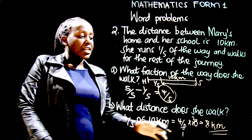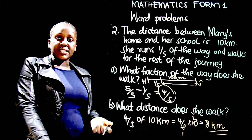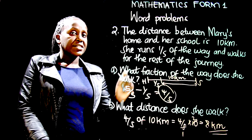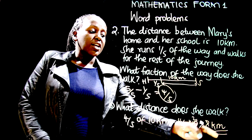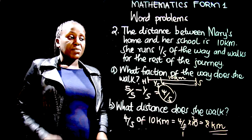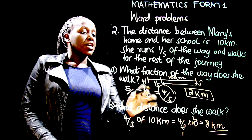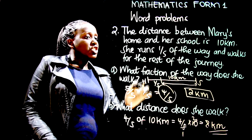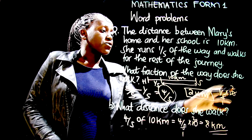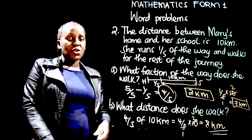To find the distance she runs, there are two approaches. First, the entire journey is 10 kilometers and she walks 8 kilometers, so 10 minus 8 equals 2 kilometers. Alternatively, since the fraction she runs is 1 over 5, calculate 1 over 5 of 10: 10 divided by 5 equals 2 kilometers. Both methods give the same answer — you can use either.